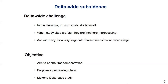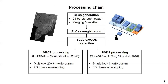This is why we have proposed a feasible processing chain, with the Mekong Delta as an illustration example. First, we form single look complex (SLC) data from the burst information of Sentinel-1. To cover the Mekong Delta, a Sentinel-1 single frame is characterized by 3 swaths and 21 bursts. The bursts are then merged to generate a complete SLC dataset. The calculations were done on a cluster system, using a lot of parallel processing.